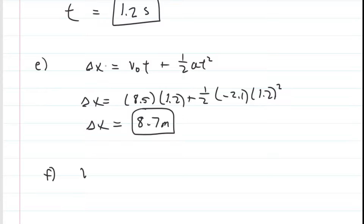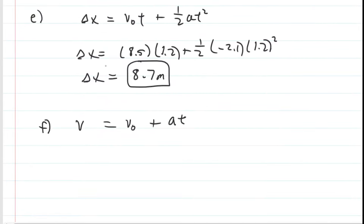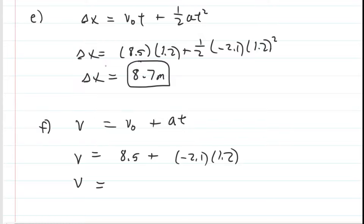Finally, in part F, it wants to know the final linear speed. That equals the initial linear speed plus the linear acceleration multiplied by the time it took for smooth rolling to begin. Plugging in the known values, we get approximately 6 meters per second. That is the correct answer for part F.